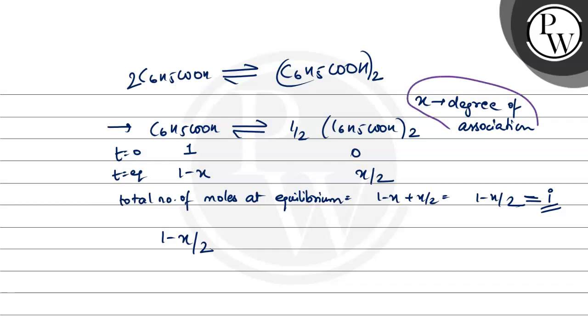So 1 minus x by 2 is equal to 0.5042. 1 minus x by 2 equals 0.5042, so x by 2 equals 0.4958. Therefore, x is equal to 0.9916.